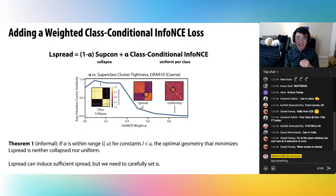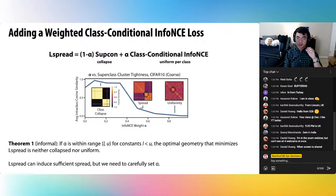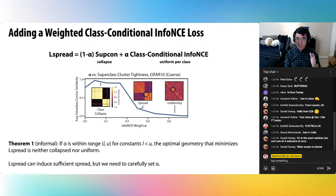To overcome analysis challenges, instead of analyzing the whole loss function end-to-end, we constructed a simple family of distributions where there is some spread, then directly computed the value of the loss function on that family and compared it to either extreme. We found that the loss of the distributions we constructed is lower than the loss at either extreme, suggesting we would find spread in practice. Getting spread carefully depends on setting the alpha weight appropriately, and our paper derives concrete values within which our family of distributions has a lower loss than either extreme.